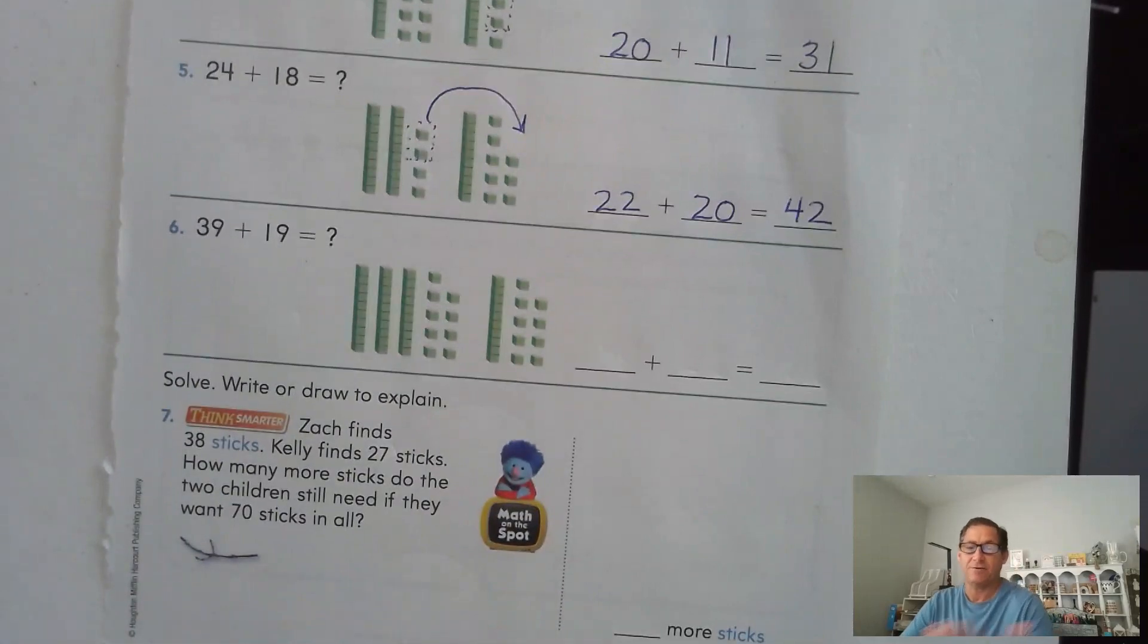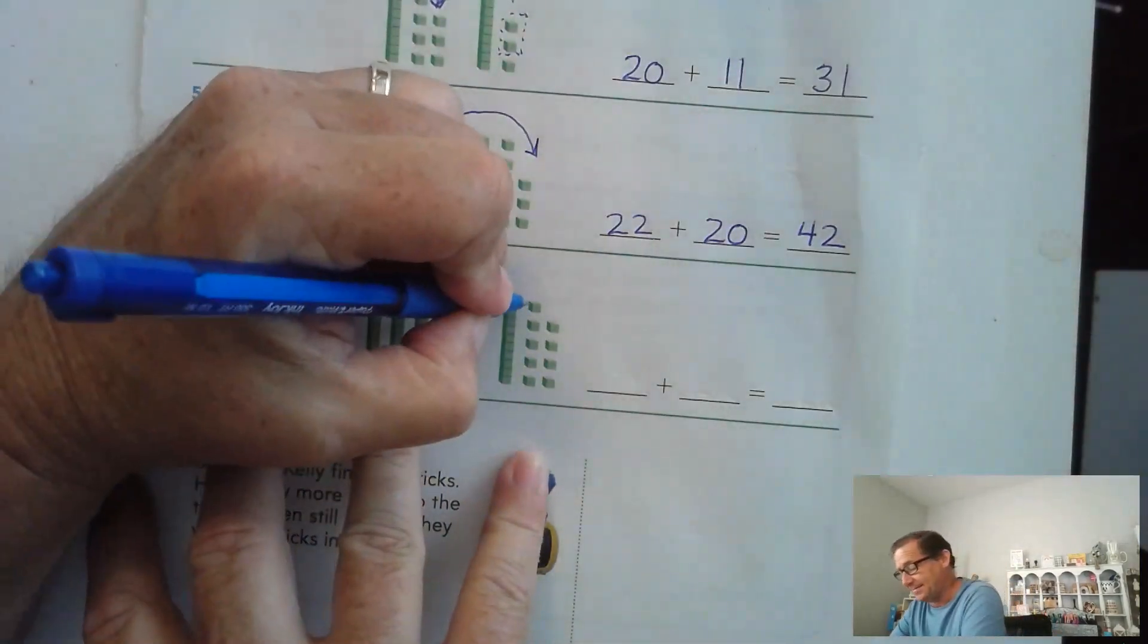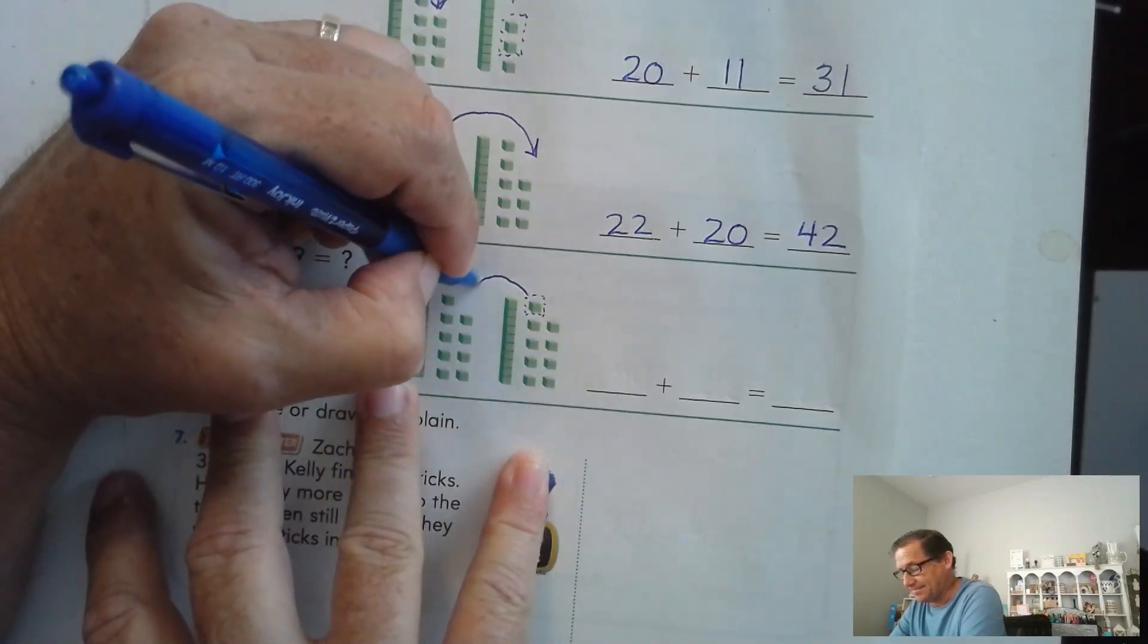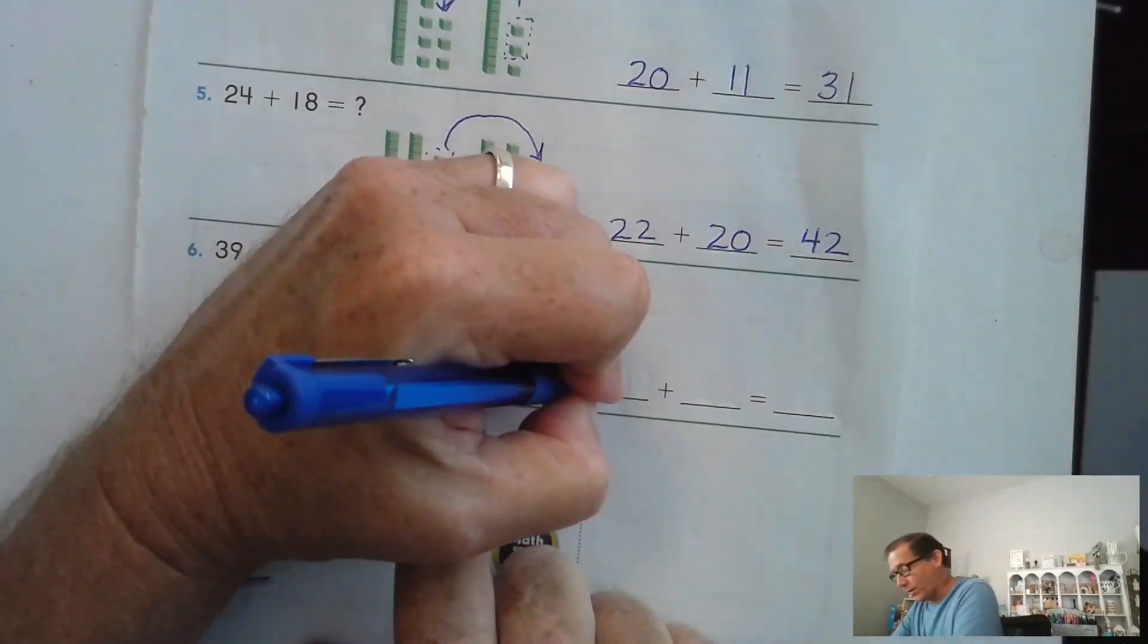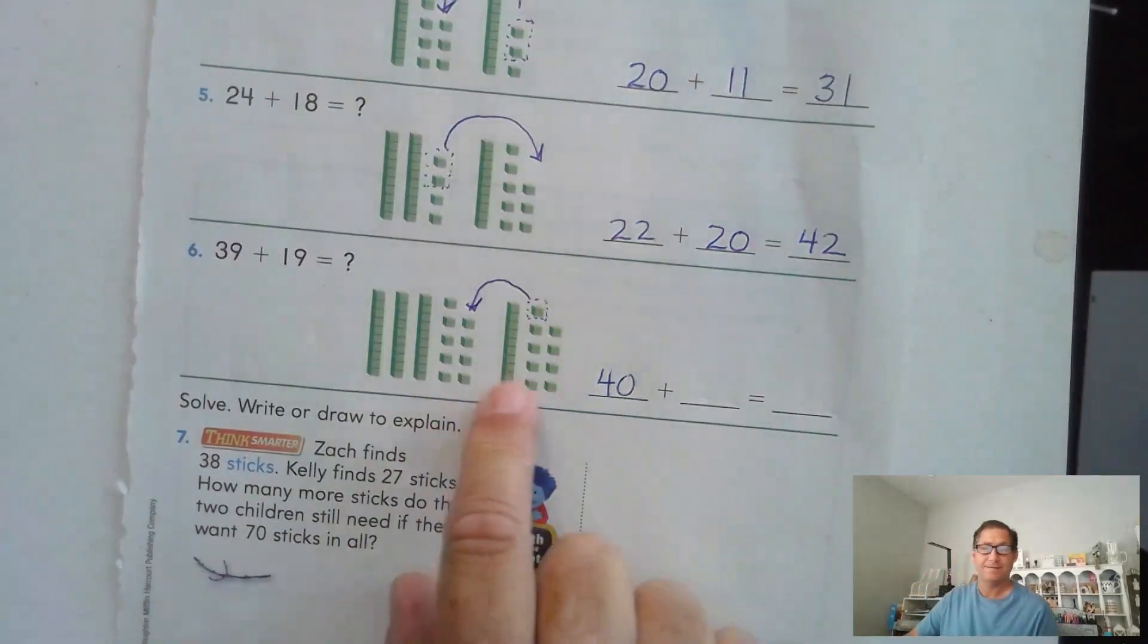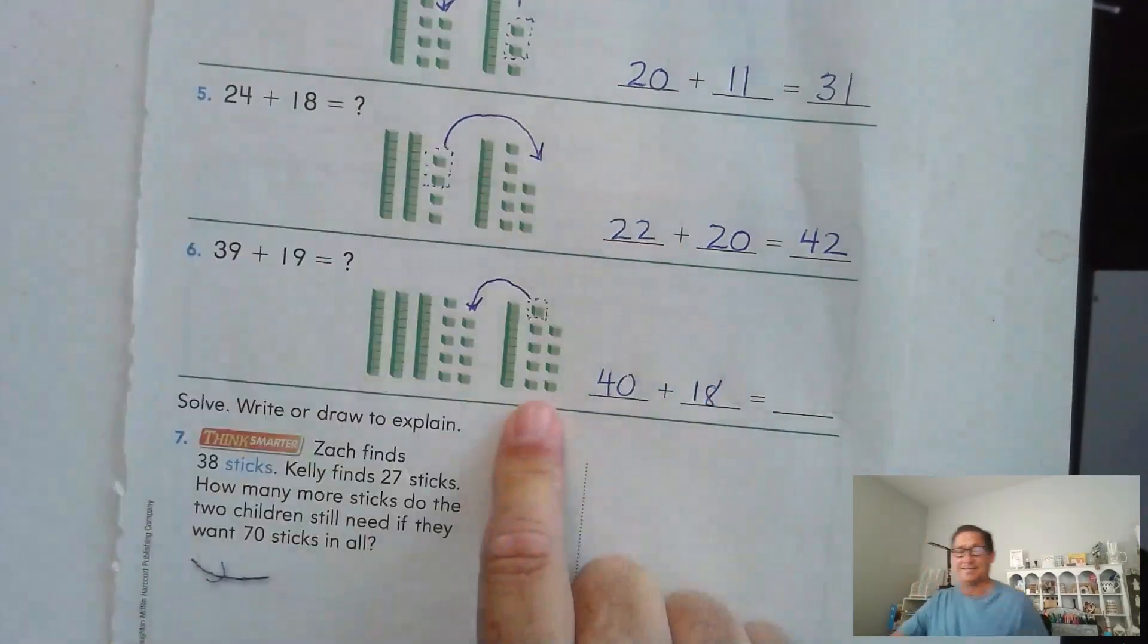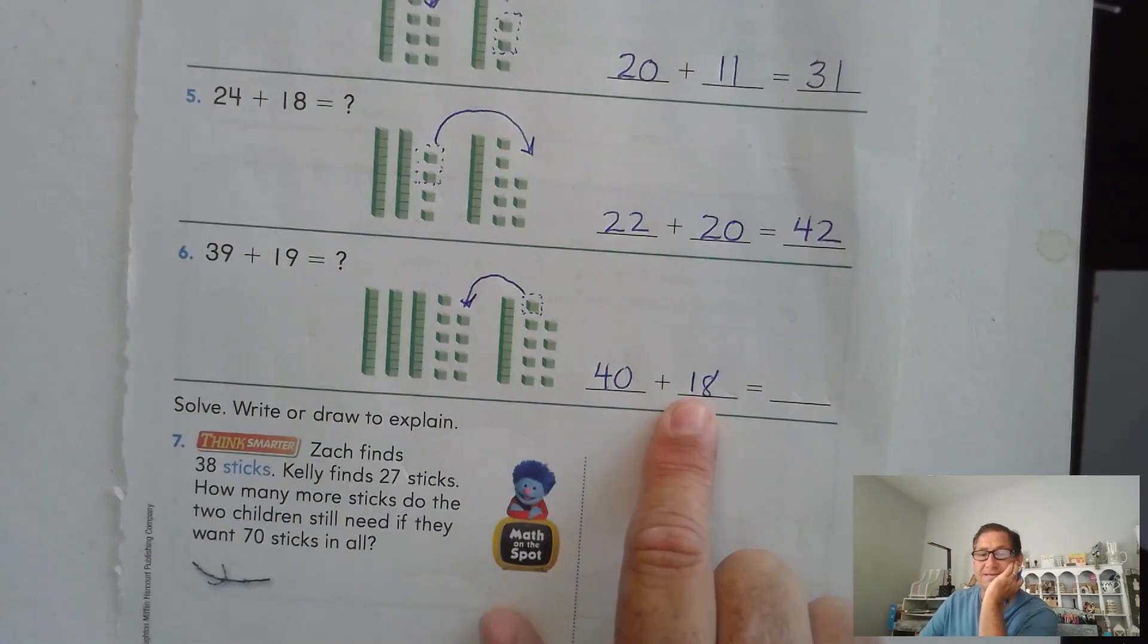39 plus 19. Now this one, they're exactly the same, right? All I have to do is add one to either one of those numbers. So I'm going to go ahead and turn the 39 into the next 10 by taking one from 19. So now instead of 39, I have 40. I have four 10s. And instead of 19, I have 18. Well, 40 plus the next 10 is 58.